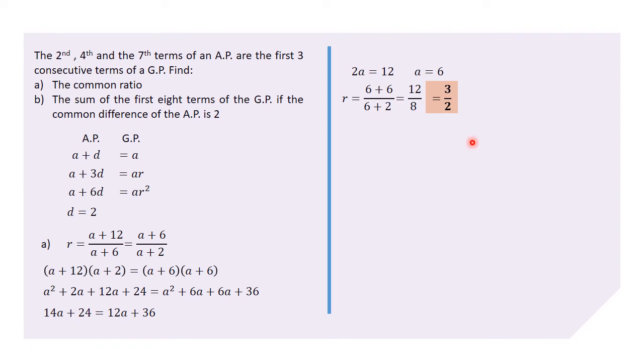Part b: we are told to find the sum of the first eight terms. Now, the first eight terms of the GP should be possible to obtain because I think we have every information, although we don't yet have the first term for the GP.